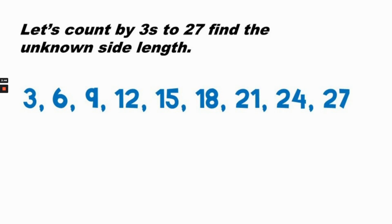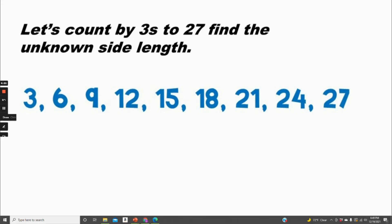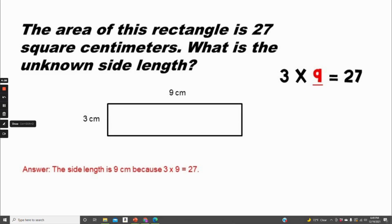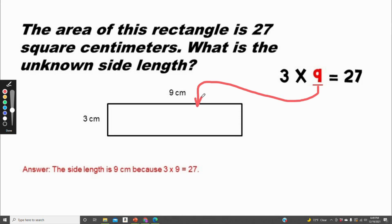Three, six, nine, twelve, fifteen, eighteen, twenty-one, twenty-four, twenty-seven — we stop there because we've reached twenty-seven. How many times did we count by three? One, two, three, four, five, six, seven, eight, nine. So three times nine equals twenty-seven. The side length is nine centimeters because three times nine equals twenty-seven.